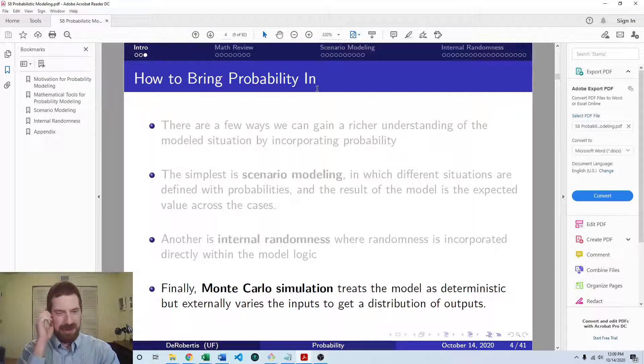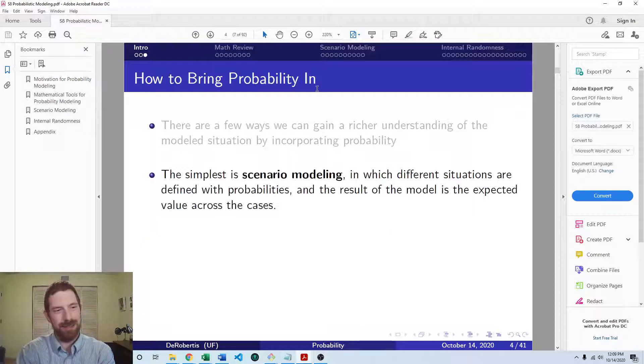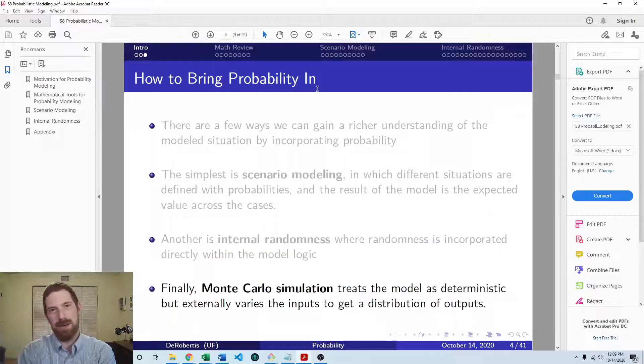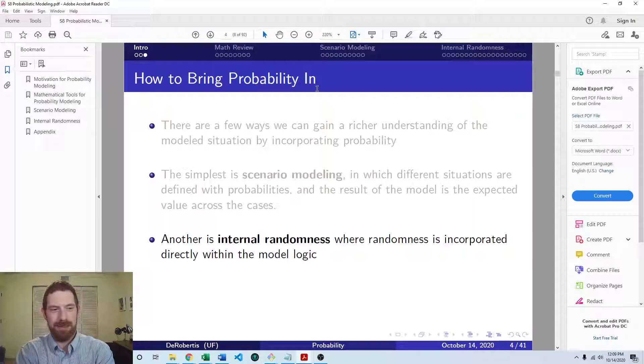So Monte Carlo simulation and scenario modeling are both methods of exploring the parameter space, just like sensitivity analysis. Whereas internal randomness is just a particular feature of the model that you're building. It's actually built into the base model itself, rather than being an extension of the model.